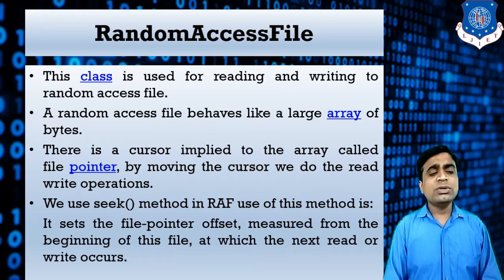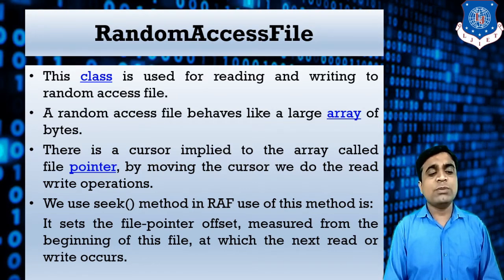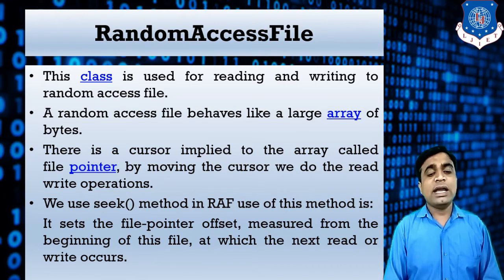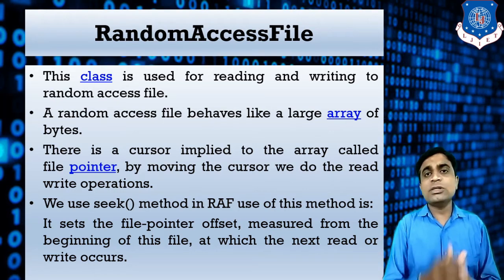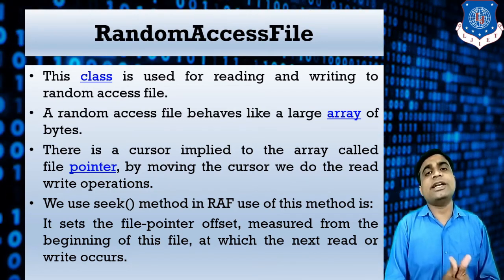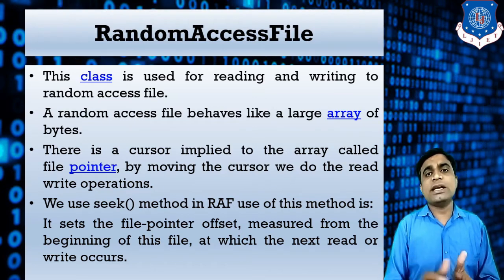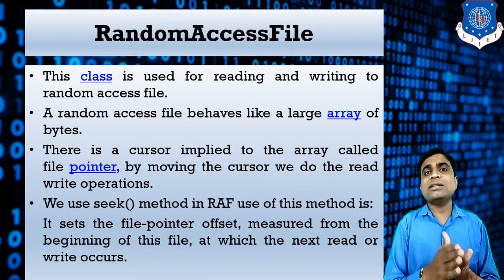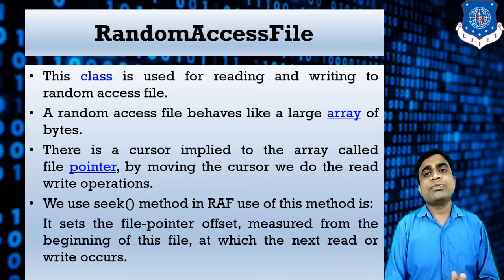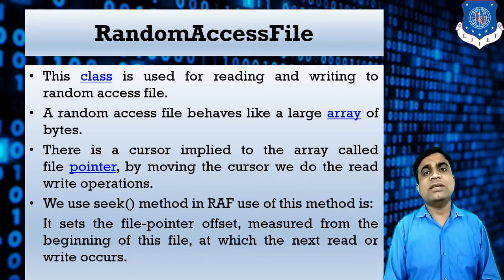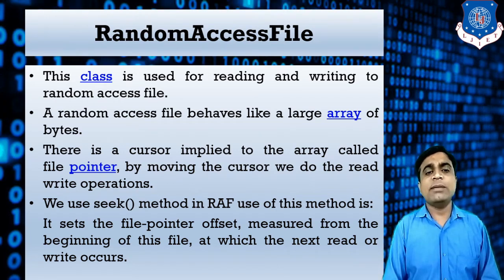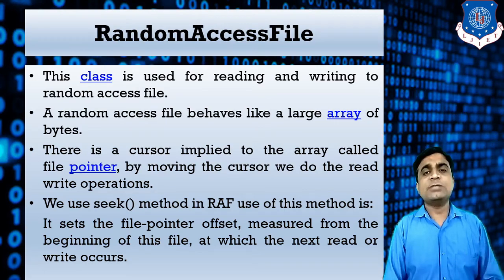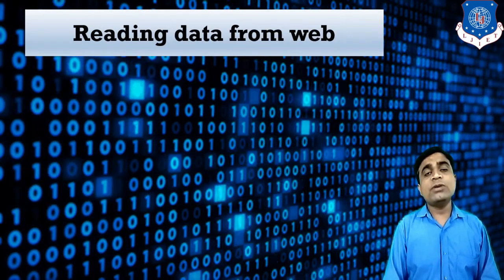The seek() method is used to set the file pointer in Random Access File. It sets the file pointer offset measured from the beginning of the file, indicating where the next read or write will occur. You count from the first character of the file; for example, to set it to the fifth character, you count five positions from the start. I will demonstrate all this with programming examples.